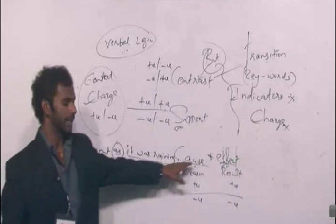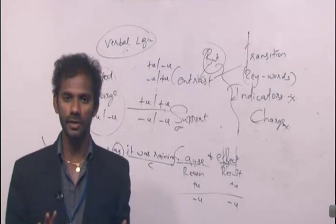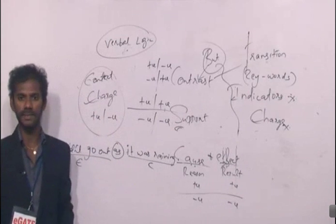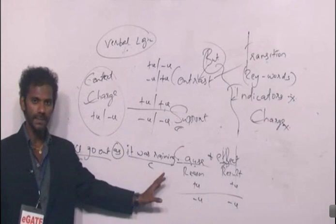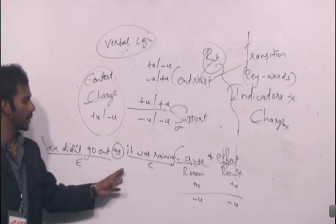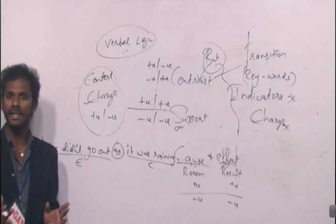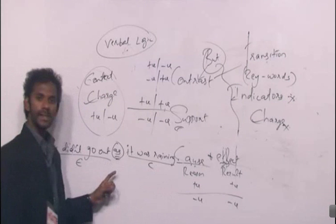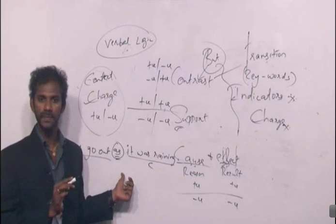I told you about cosmic indicators. Any word connecting a reason and a result is termed as a cosmic indicator. For example: 'We didn't go out as it was raining.' There are two ideas here — it was raining, and we didn't go out. The reason is it was raining, and the result is we didn't go out. So 'as' is a cosmic indicator because the cause and the effect are connected by it.